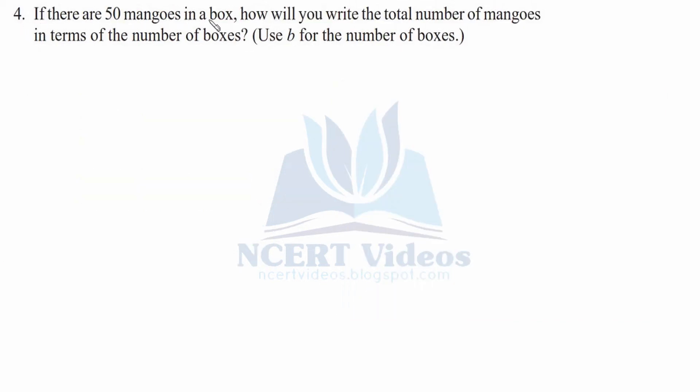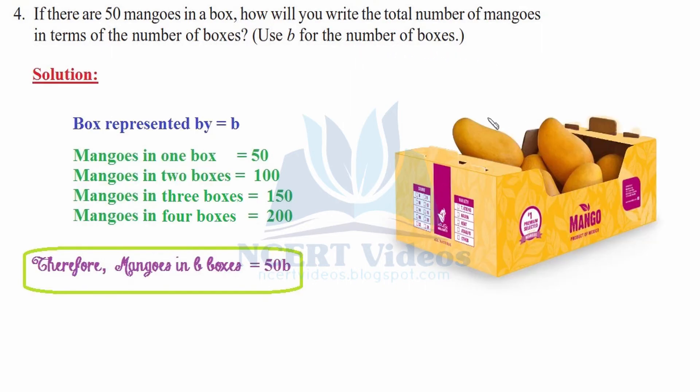Question 4: If there are 50 mangos in a box, how will you write the total number of mangos in terms of the number of boxes? Use B for the number of boxes. This is your box containing mangos and it has to be represented by letter B. Mangos in one box is 50, it is given to us. This B box contains 50 mangos. Now, we have 2 boxes at the same time, so it would be 50 plus 50 equals 100 mangos, or you can say 50 times 2 equals 100.